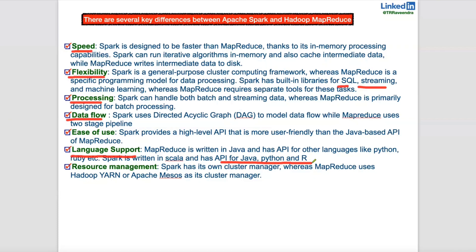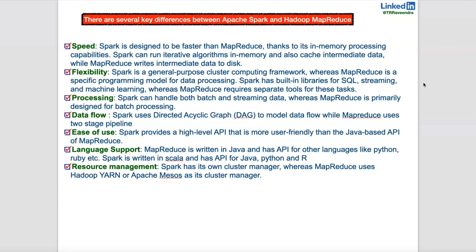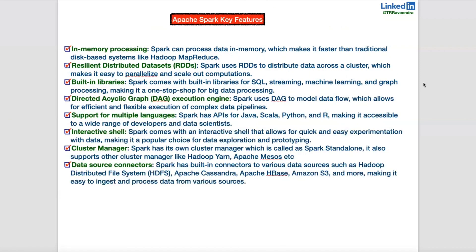Regarding resource management, Databricks and Spark have their own built-in standalone resource manager. Databricks does not use third-party resource managers like YARN or Mesos, whereas MapReduce depends on third-party resource managers such as Apache Mesos or Hadoop YARN. Spark does support those third-party managers in on-premises or customized environments, but not in Databricks. This is a major difference between Spark and Hadoop MapReduce.